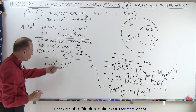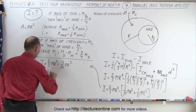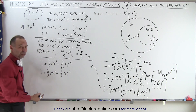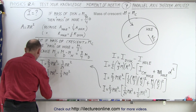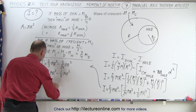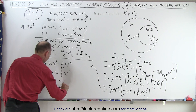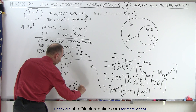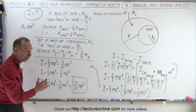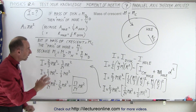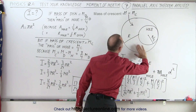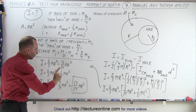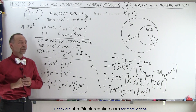Three over 24 simplifies to one-eighth. So moment of inertia equals two-thirds MR² minus one-eighth MR². Using a common denominator of 24: that's 16 over 24 MR² minus three over 24 MR², which gives 13 over 24 MR². This is the moment of inertia of the crescent — the disc with the hole cut out — where M is the mass of the crescent only, not the whole disc.